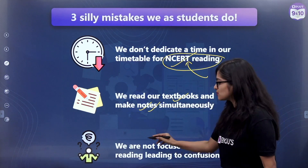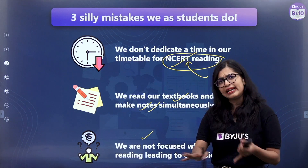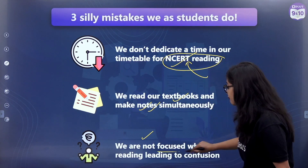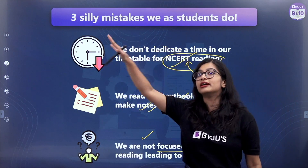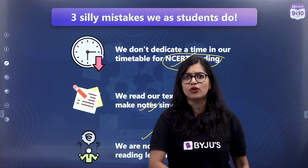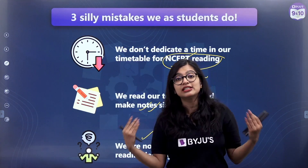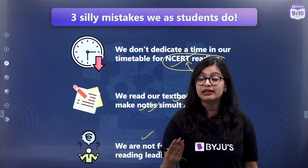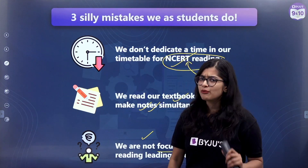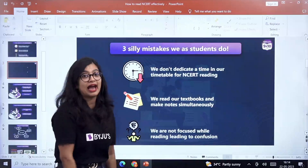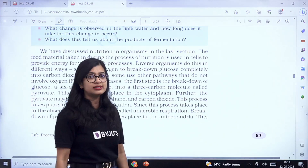Last but not least, one silly mistake some students do is that they will dedicate time to read, but they also tend to get distracted and will not be focused while reading. The mind wanders off, or suddenly there's a ping on the phone and you want to check what message is there. When in a distracted environment you're trying to do NCERT reading, it will be difficult. Which is why today I'm going to tell you some very simple, easy ways to do effective NCERT reading — and I'm actually going to show it to you with a textbook.